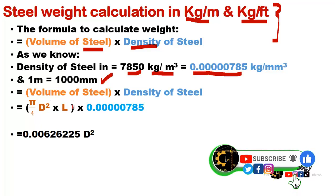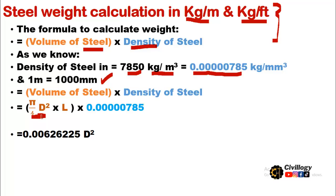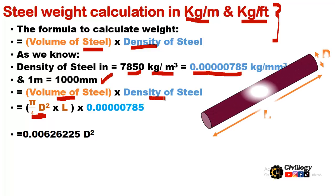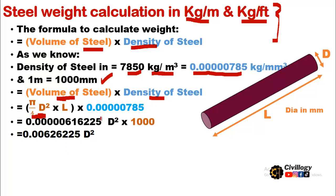Using the formula — volume of steel multiplied by density of steel — and knowing that volume equals area times length: the area of a circular bar is (π/4)D², multiplied by length L. Here D is the diameter in millimeters and the unit length is one meter, so length equals 1000 mm. We leave D as a variable since we calculate weights for different bar sizes.